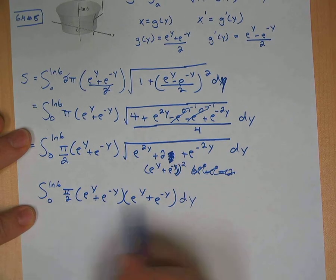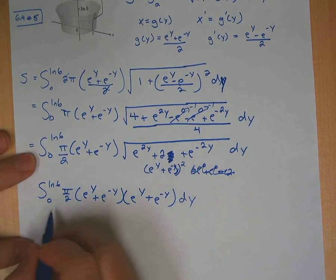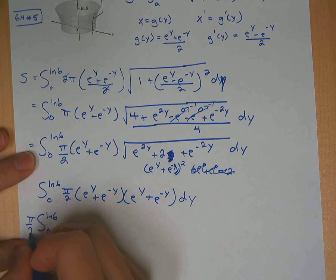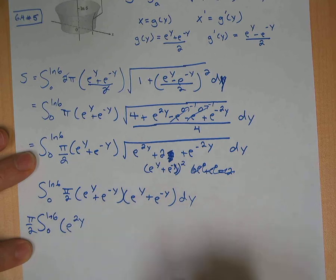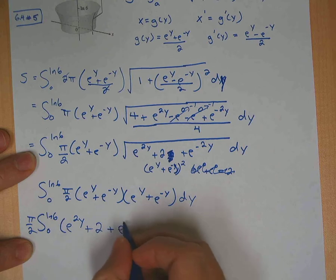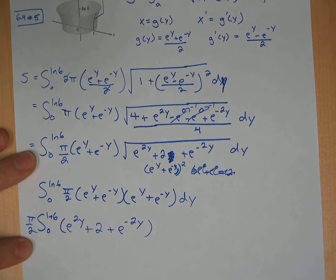Okay, notice this is the same thing. So it's squared, but I'm going to go ahead and distribute that out. So let's put the π over 2 out here. So you get e to the 2y. And then your two middle terms, like we said earlier, it's going to be a plus 2 plus e to the negative 2y. That's basically what we had up here.